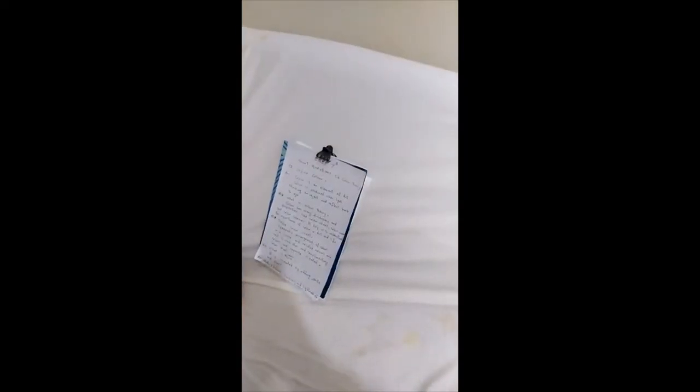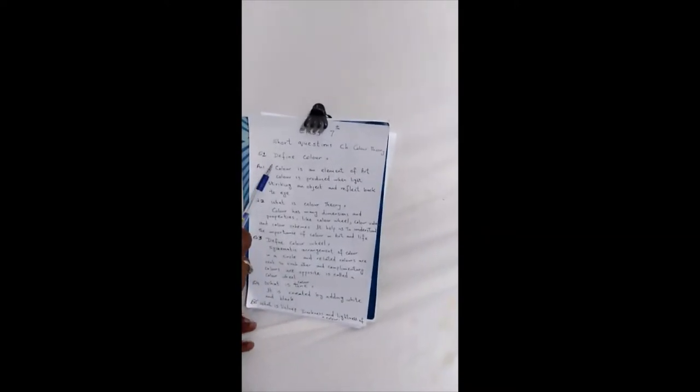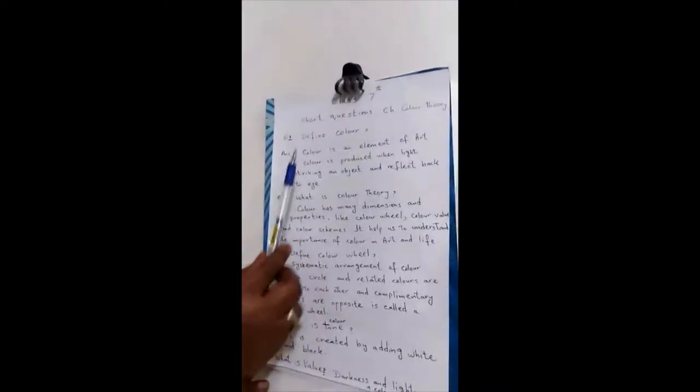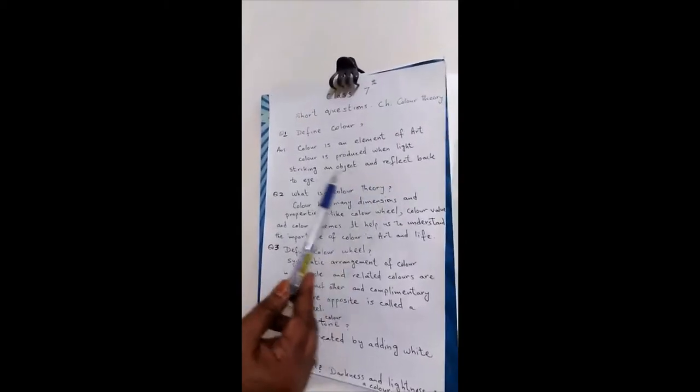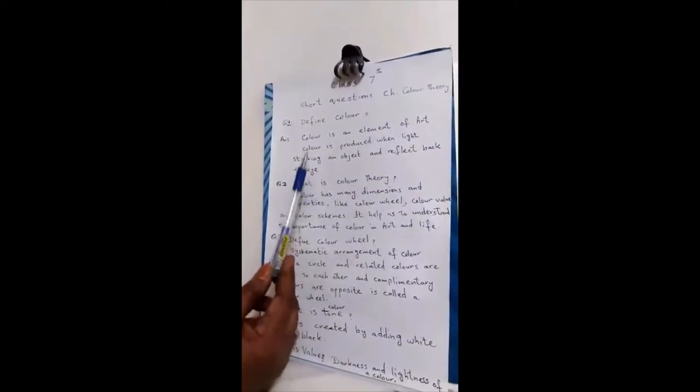Good morning class 7. Today we are going to learn short questions from chapter Color Theory. First question is: define color. Color is an element of art. Color is produced when light strikes an object and reflects back to the eye.